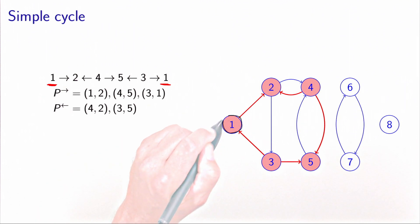So the cycle starts at 1, it goes to 2 with the forward arc, then it goes to 4 with the backward arc, then goes to 5 with the forward arc, it goes to 3 with the backward arc, and then we go back to 1 using a forward arc. This is the simple cycle.